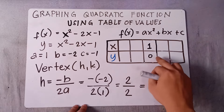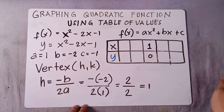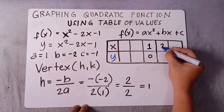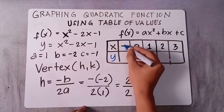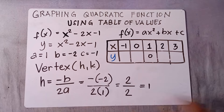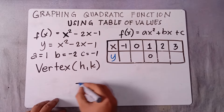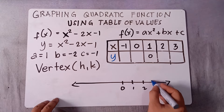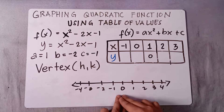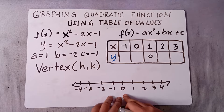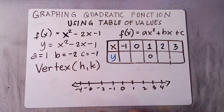For the x-values, it's easy to determine what numbers go around the center of 1, because we follow the number line. Going right, add 1: so 1+1=2, 2+1=3. Going left, subtract 1: 1-1=0, 0-1=-1. Do not forget — for the x-values, just follow the number line, adding 1 to the right and subtracting 1 to the left.